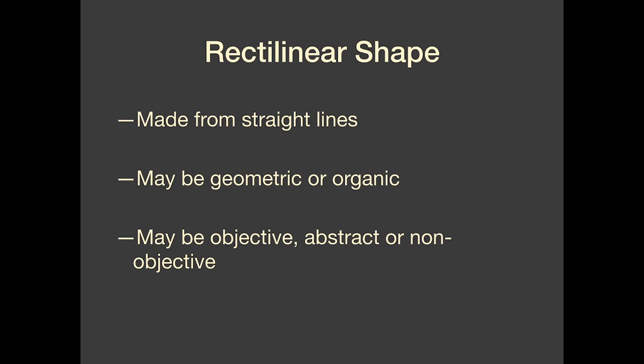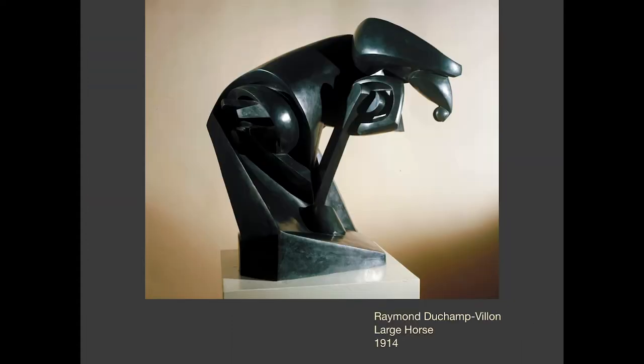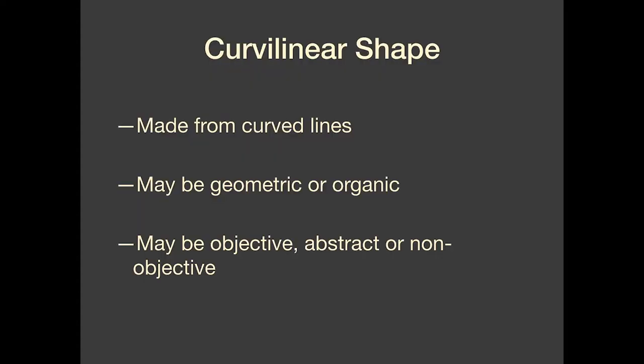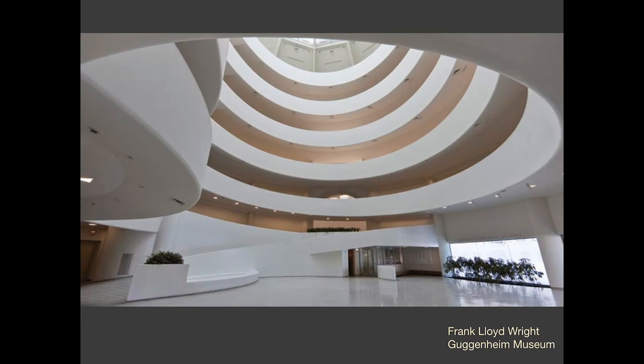Next up we have rectilinear versus curvilinear shape. Rectilinear is my least favorite word in art because it always sounds like some kind of horrible medical procedure. But all it really means is that it's something made from straight lines. So anytime you have a shape that's mostly straight lines, it's rectilinear. You can have geometric rectilinear or organic rectilinear, and objective, abstract, or non-objective. Curvilinear shape is kind of the opposite of rectilinear — it's something made mostly from curved lines. The Venus of Willendorf is a perfect example — that's all curved lines. Here we also have the Guggenheim in New York, mostly curved, curvilinear lines.